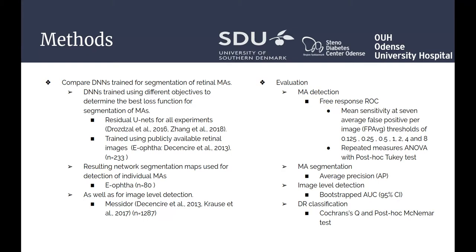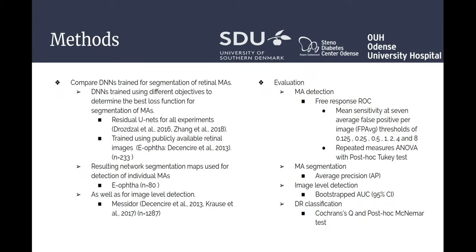We evaluate network performance using different metrics. For MA detection, we use the free-response receiver operator curve. For segmentation, we calculate the average precision score. For image-level detection, we calculate bootstrapped AUC scores, and we also perform different statistical tests.